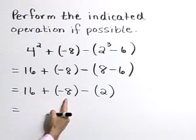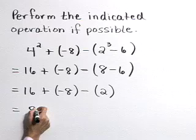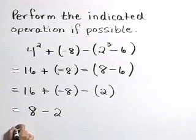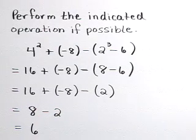Working now from left to right, 16 plus negative 8 is 8, and 8 minus 2 is 6. So this expression simplifies to the number 6.